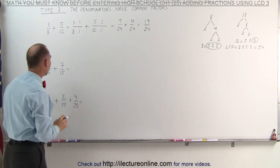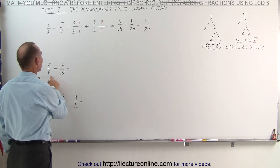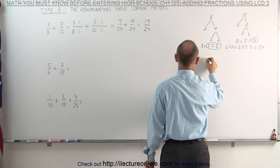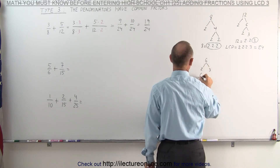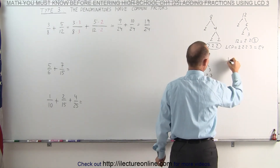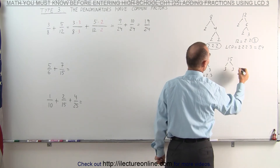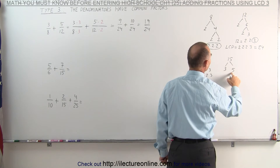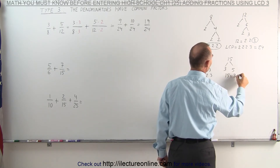Let's try the second example. Again, I have two denominators which have common factors. I take the number 6 — I can divide that by 2 to give me 3, which means 6 can be written as 2 times 3. The number 15 can be divided by 3 to give me 5 — I said 5 but wrote 3 — so 15 can be written as 3 times 5.